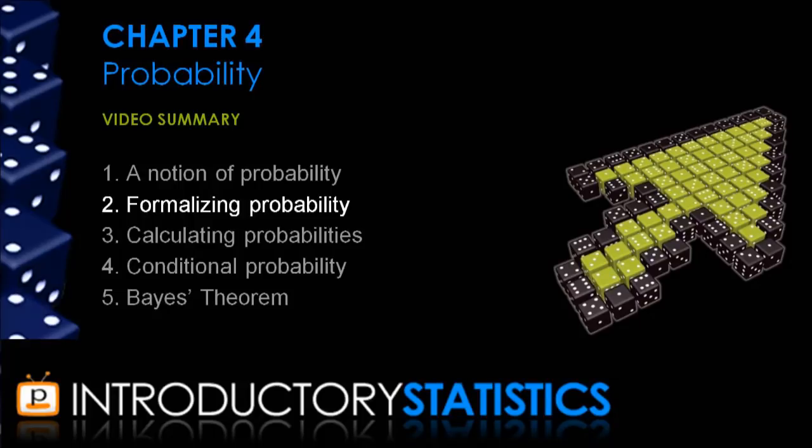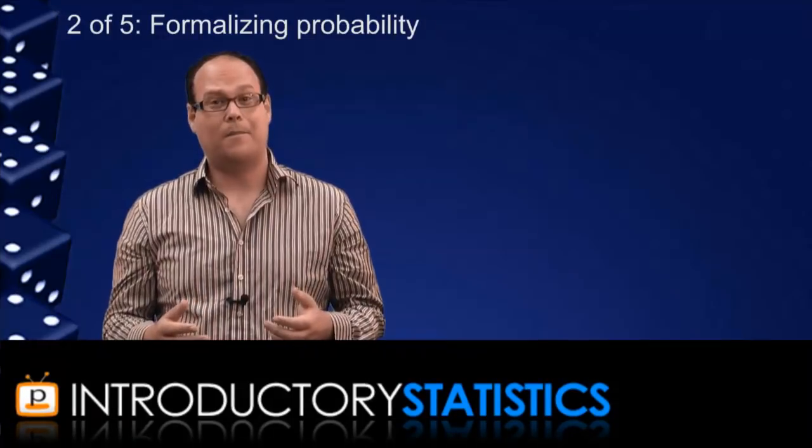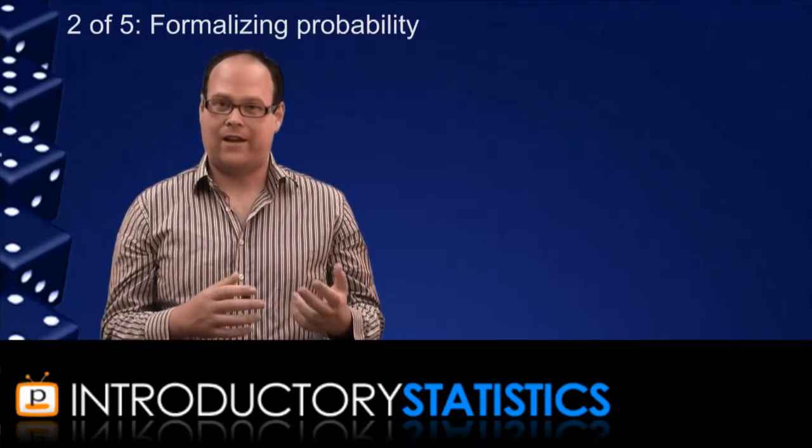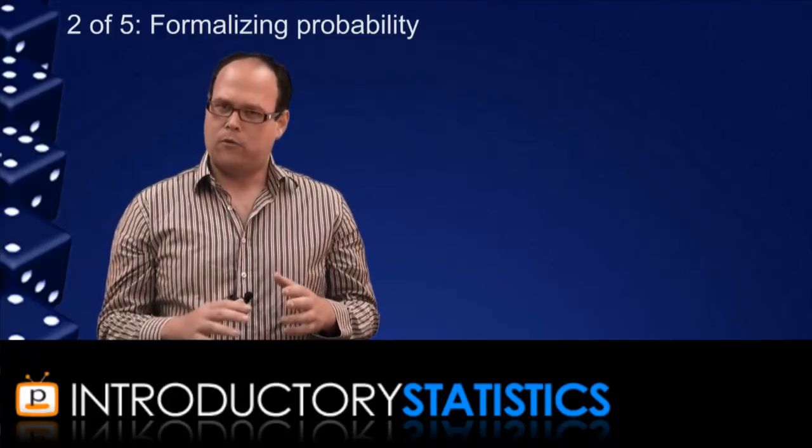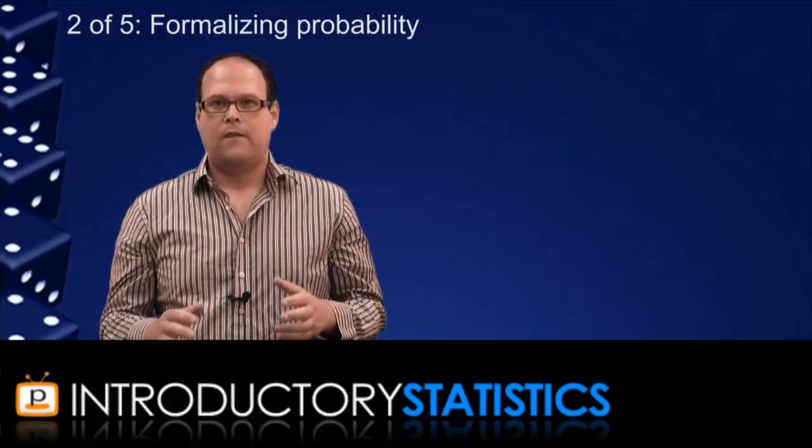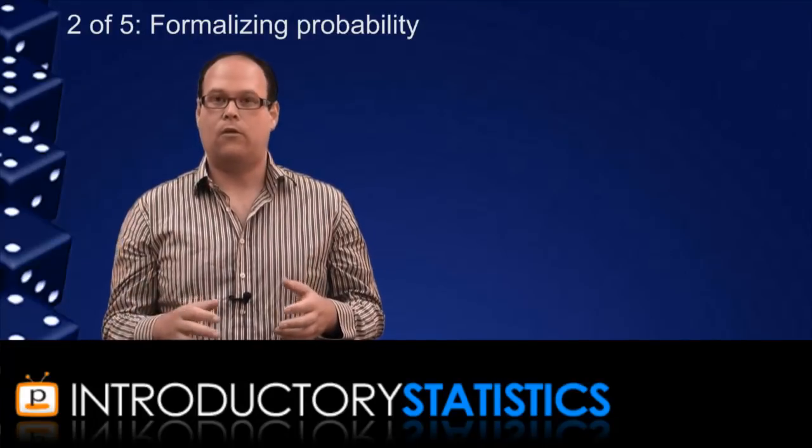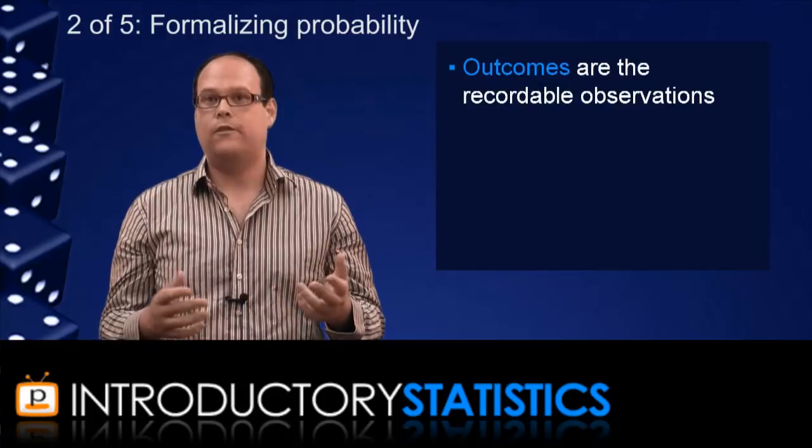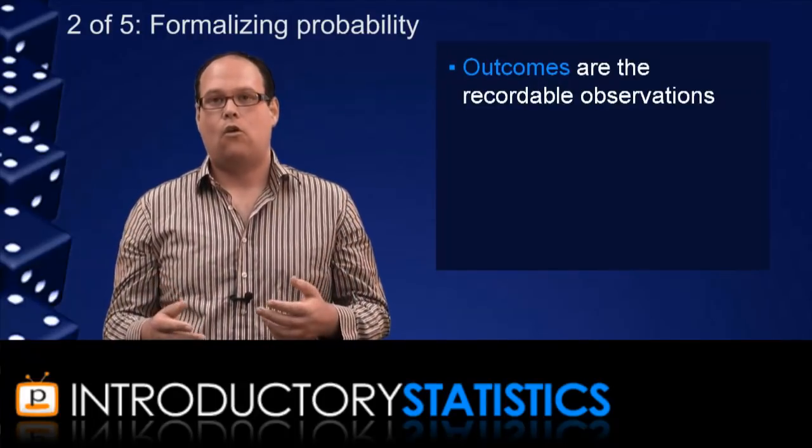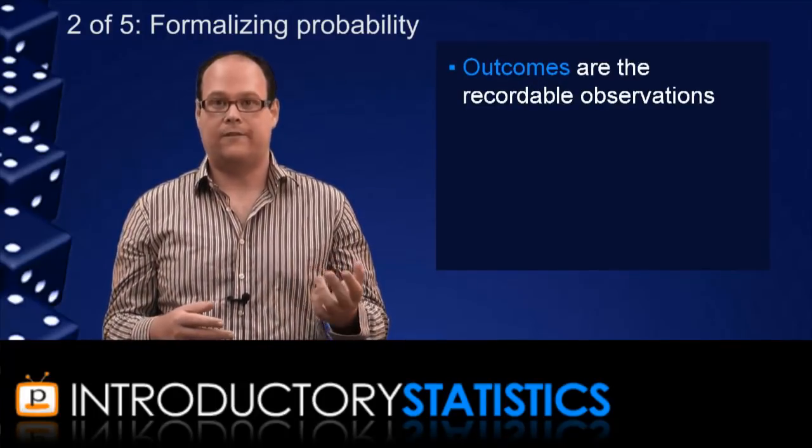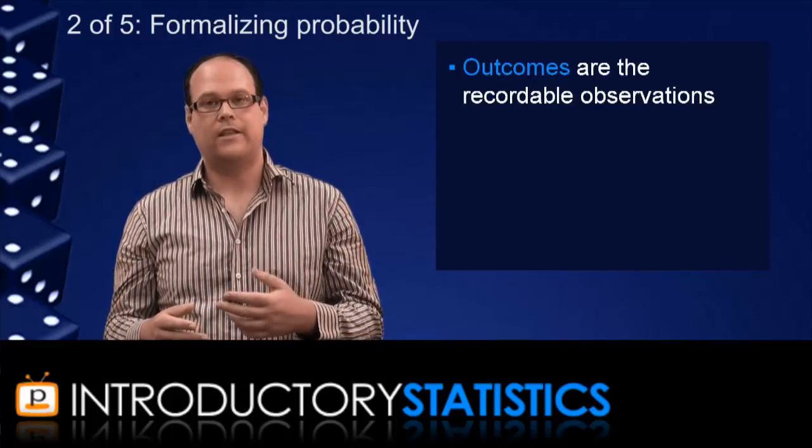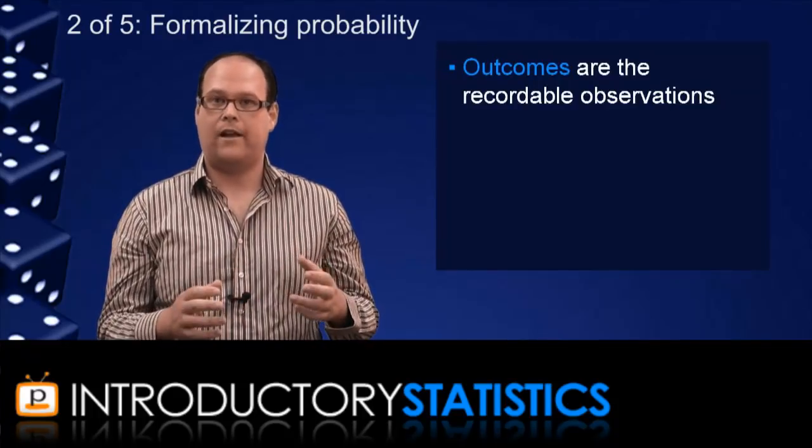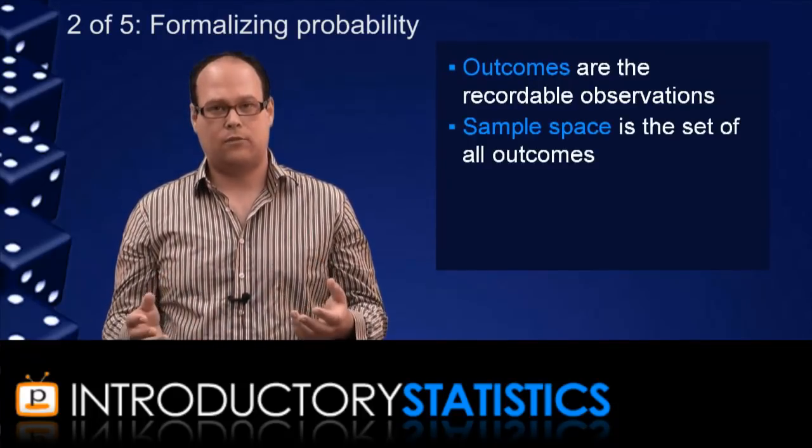Developing this approach is what we're now going to look at. This will mainly involve formalising our definitions of outcomes and events, because when we talk about a probability, we are always talking about the probability of an outcome or an event. Now whenever an observable procedure can occur, the different possible recordable observations are what we call the outcomes of that procedure. So flipping a coin will have two different outcomes: heads or tails. Or rolling a die will have six different possible outcomes: a one, two, three, four, five or six. And when you list all the outcomes out like that, the list of all of the outcomes for a given procedure is known as the sample space.